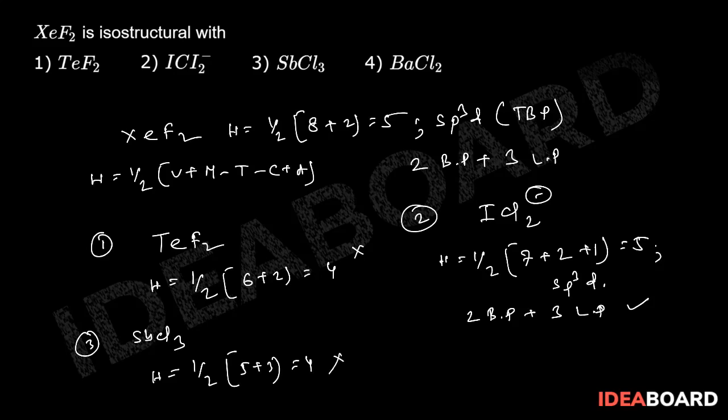In case of 4, again barium chloride, it is not even a covalent molecule. This is an ionic compound. So the correct answer is basically ICl₂⁻, which is given in option number 2.